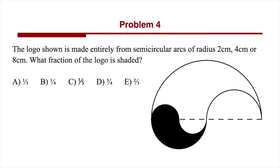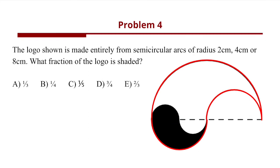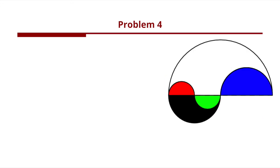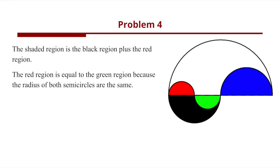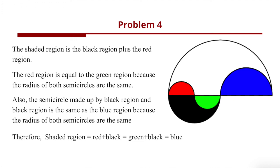Here is the last problem. The logo shown is made entirely from semicircle arcs of radius 2 cm, 4 cm, or 8 cm, and the question asks what fraction of the logo is shaded. The shaded region equals the black region plus the red region. The red region equals the green region because their radii are the same. The semicircles made up by the black and green regions are the same as the blue region because their radii are also the same. Therefore, the shaded region equals red plus black, which equals green plus black, which equals blue.